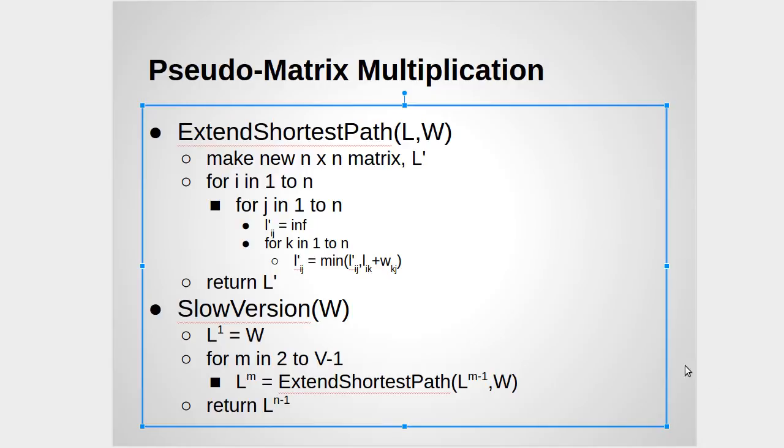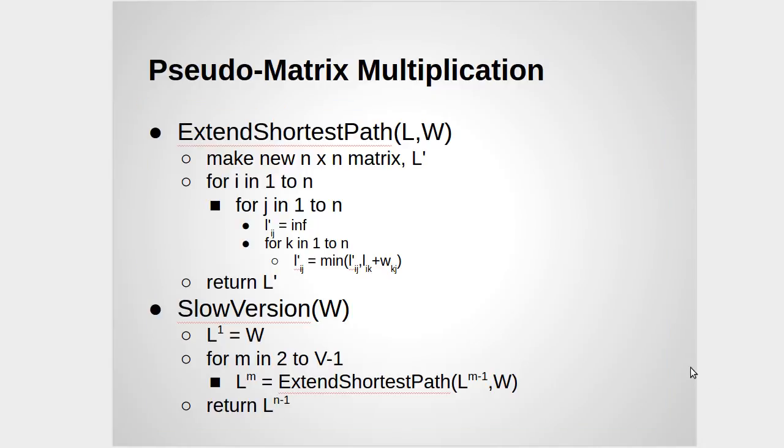You can write a slow version of this. And that slow version starts with your original value of L is W. And then you go for, in this case, it's actually V minus two steps where you call this ExtendShortestPath. And you multiply the value of L by W over and over and over again. You do that V minus two times. And at the end of that, the result is a matrix that gives you the path length between all of those pairs.